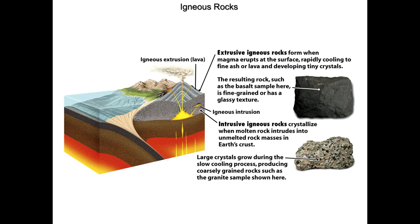When we talk about igneous rocks, we need to talk about whether they're extrusive igneous rocks — forming when magma erupts at the surface, cooling rapidly to either a fine ash or a lava, in both cases having very tiny crystals. The most common resulting rock is basalt. It is a very fine-grained rock, or if it cools even more rapidly, it can have a glassy texture — essentially it is glass.